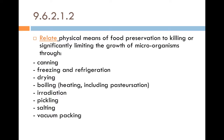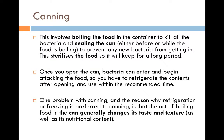Moving on to the next dot point in 9.6.2, we're looking at the types of physical preservation techniques, focusing on canning, freezing and refrigeration, drying, boiling, irradiation, pickling, salting, and vacuum packaging. With canning, this involves boiling the food first and then sealing the can airtight, preventing any bacteria from entering. This sterilizes the food so it can be kept for a very long period of time. However, once you open the can you really do need to refrigerate it, and this only lasts for a short period before spoilage occurs. One problem with canning is that boiling the food can generally change its taste and texture from its original state.